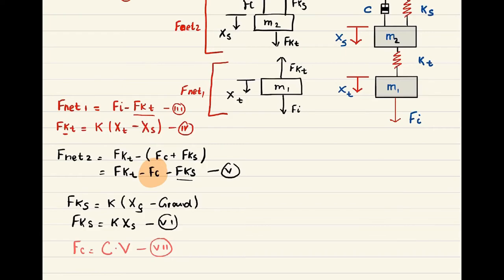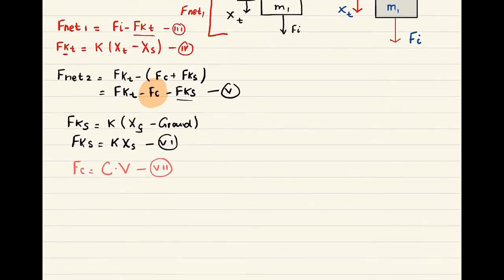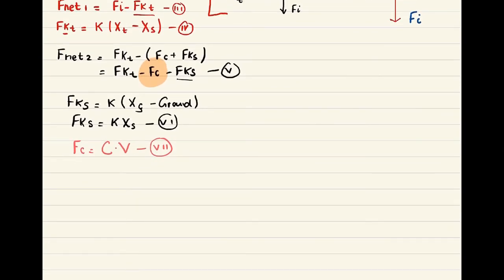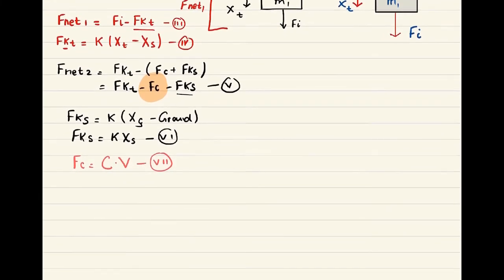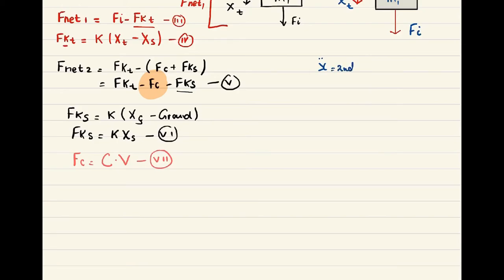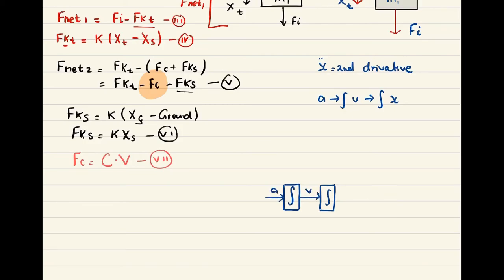Now we start drawing the block diagram. Since we have two masses, we'll use integration sections — two blocks of integration for each mass, giving four total. Integrating acceleration gives velocity, and integrating velocity gives displacement X. So for M1 we have block one and block two with acceleration going in, velocity in between, and displacement Xt coming out.